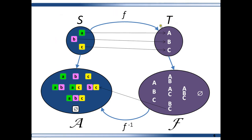A measurable function is not necessarily a set of objects mapping to another set of objects — often T is the real line and F is the sigma algebra of the real line. Now remember, it is because the set {b, c} in the inverse function's range maps to the set {B, C} in the inverse function's domain, based on the set B and set C in the function's range mapping to the set b and set c in the inverse function's range.